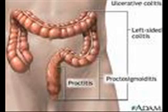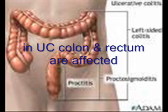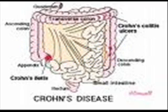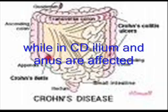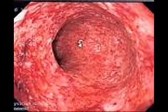I'm going to tell you the difference between ulcerative colitis and Crohn's disease. Ulcerative colitis mainly affects the colon and rectum, while in Crohn's disease the ileum and anus are affected.